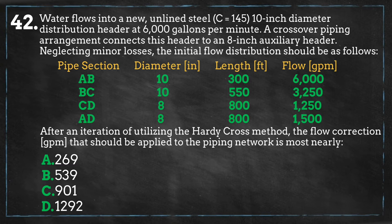The general relationship between head loss and flow is the following: head loss h is equal to the variable k times flow q raised to the n power.